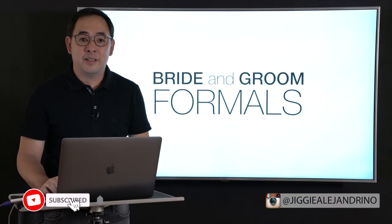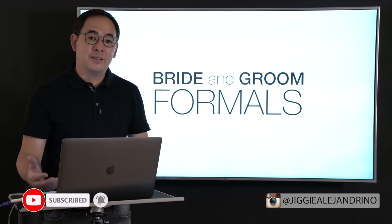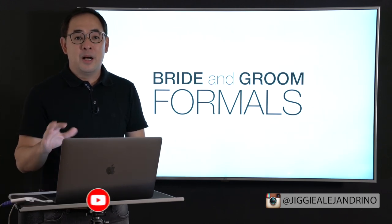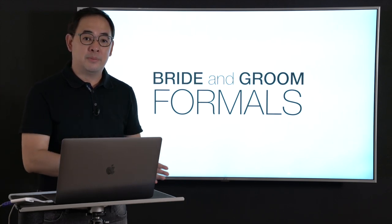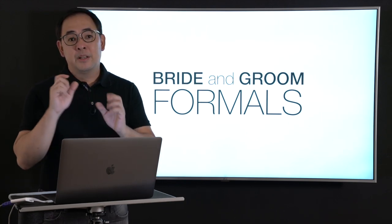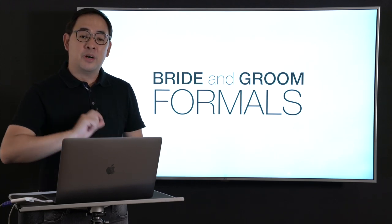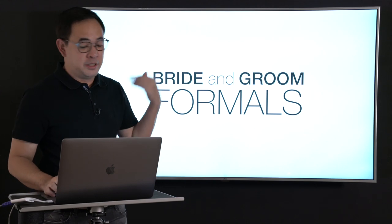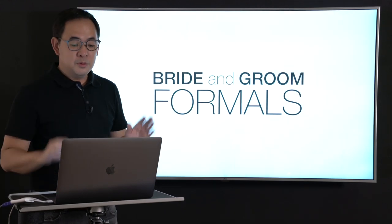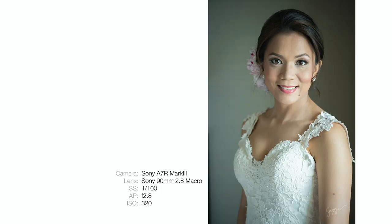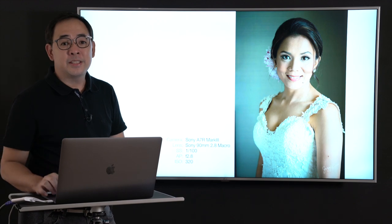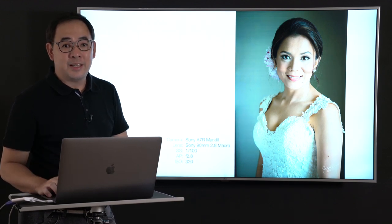This brings us to the bride and groom formals. I don't get to shoot the groom as much as I'd want to since I'm mostly with the bride, but the groom normally gets ready ahead of the bride, so I run to the groom's room to take a few portraits. With bride and groom formals, keep it simple first — get a beautiful portrait of the bride, get a beautiful portrait of the groom, then play around. I shot this with a Sony 90mm 2.8 macro.